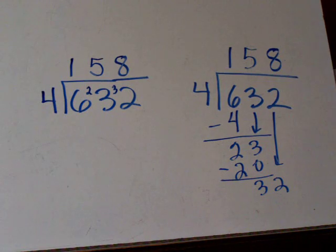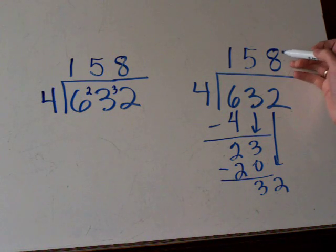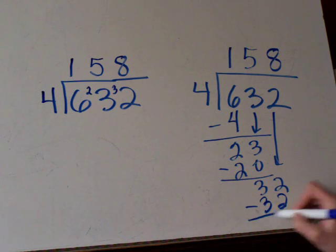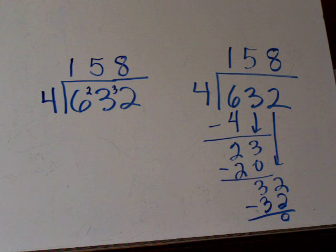Again, we write the answer at the top. Generally, kids are told 4 times 8 is 32. You put it down here and you kind of verify that there is no more remainder. So that's the easy way of doing short division.